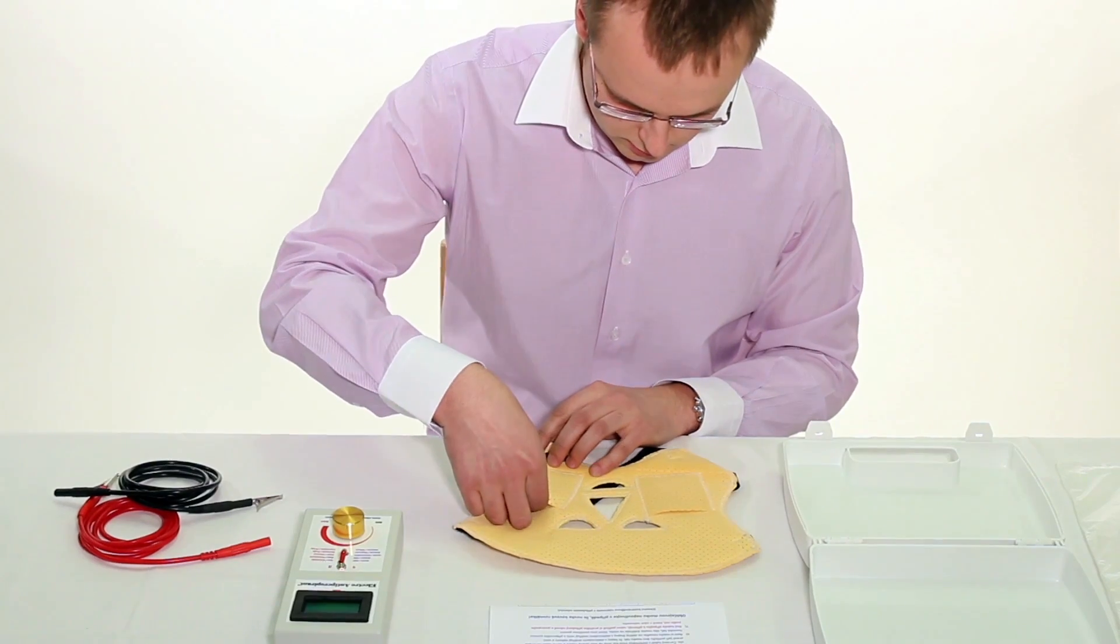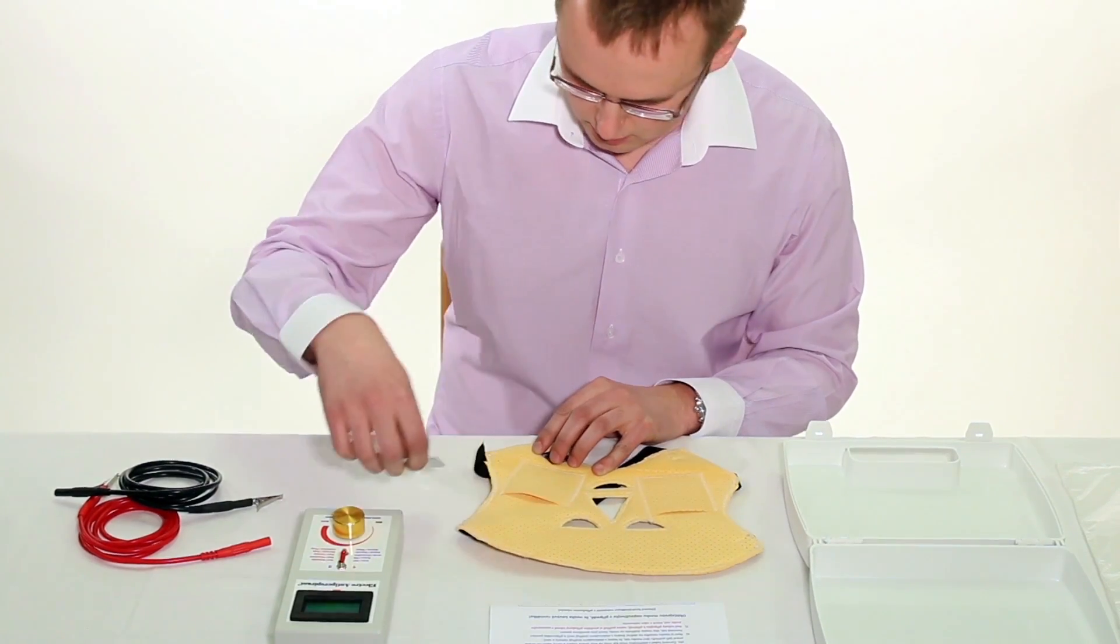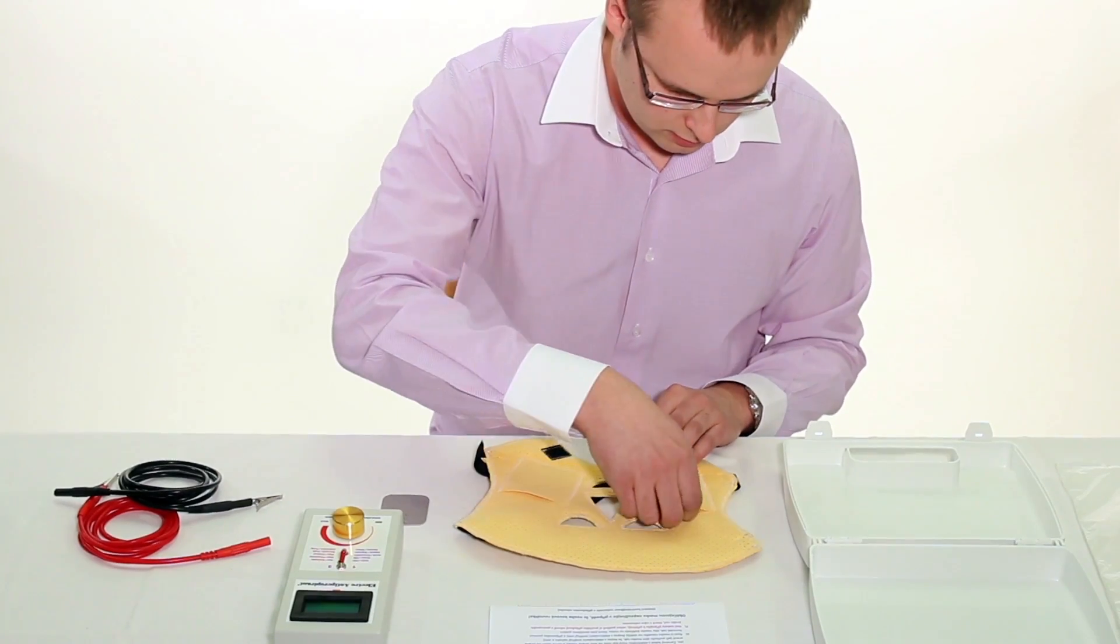In the pockets of electro antiperspirant face mask you will find special small electrodes. Take them out.